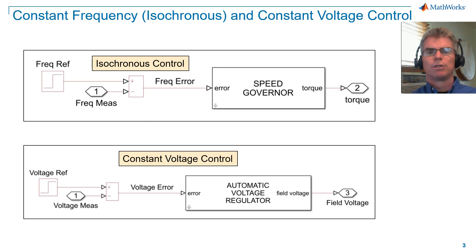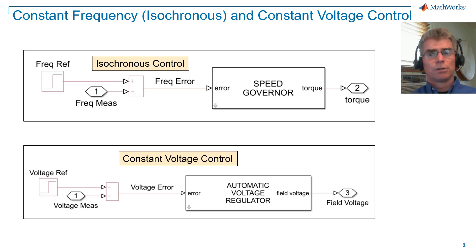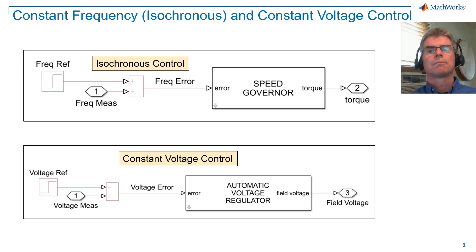Before we dive into droop control, I'll first set some context by discussing constant frequency and constant voltage control. Note that constant frequency control is also referred to as isochronous control. Isochronous control means a generator unit will regulate frequency to a given setpoint, regardless of the active power output of the generator. Constant voltage control means a generator unit will regulate terminal voltage to a given setpoint, regardless of the reactive power output of the generator.